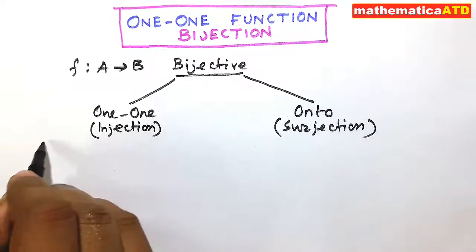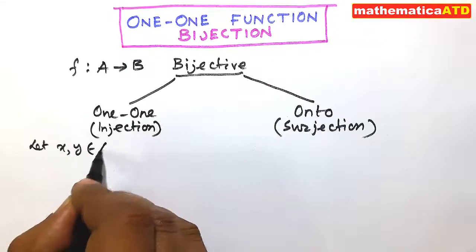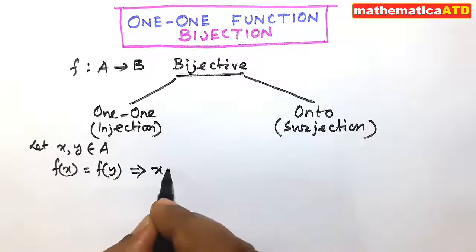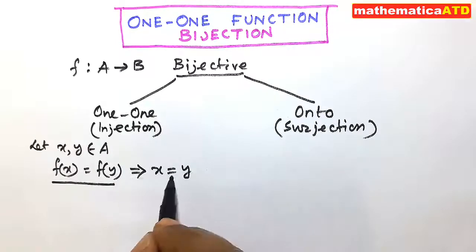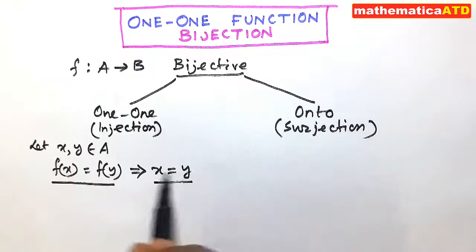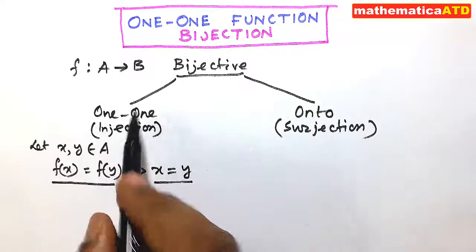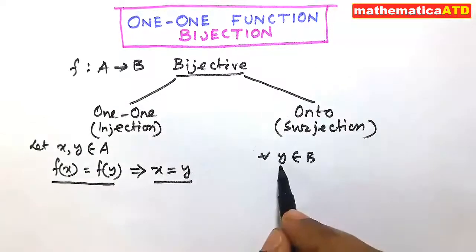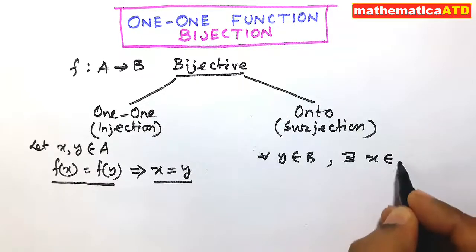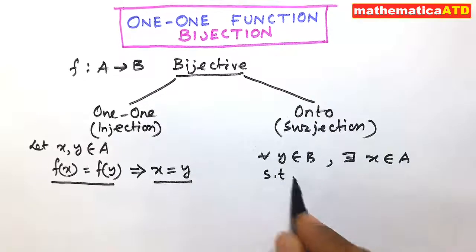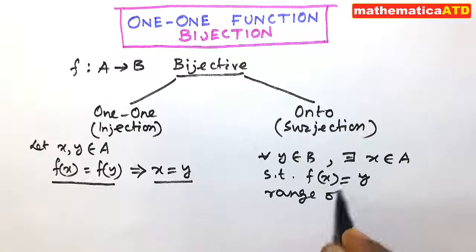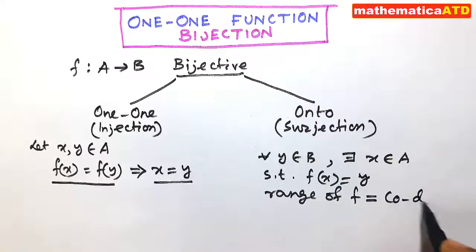Let x and y be two elements of set A. If f(x) equals f(y) implies that x equals y, then the function f is injective, that is one-one. On the other hand, for all y belonging to B — the codomain — there exists x belonging to A, the domain, such that f(x) equals y; that is, the range of f equals the codomain of f. Now let us draw the diagram.